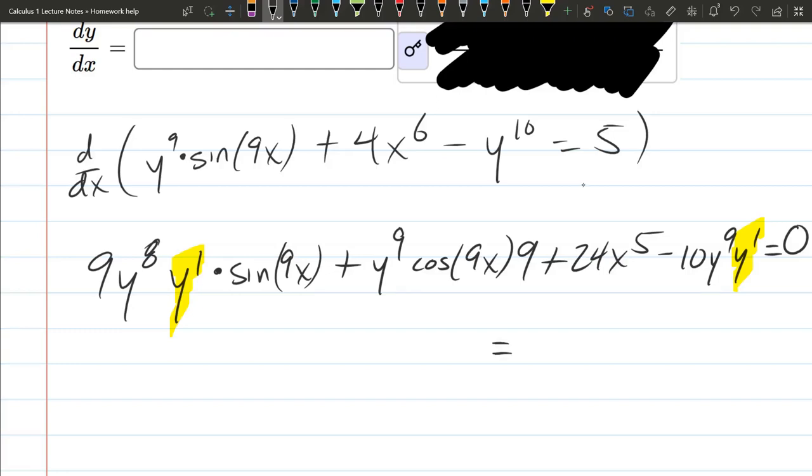So I'm subtracting both of those terms that I underlined, so it's negative y to the 9th cos 9x, that times 9. Usually we write those in the front, so I'm just going to rewrite it like that, and then minus 24x to the 5th.